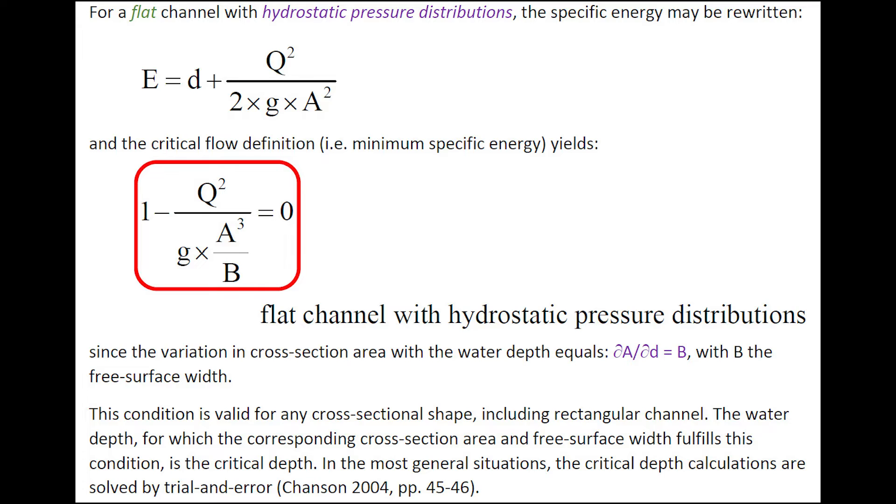This condition, 1 minus q squared over g times A cubed over B, is valid for any cross-sectional shape, including a rectangular channel. The water depth for which the corresponding cross-section area and free surface width fulfills these conditions is the critical depth. In most general situations, it is solved by trial and error.